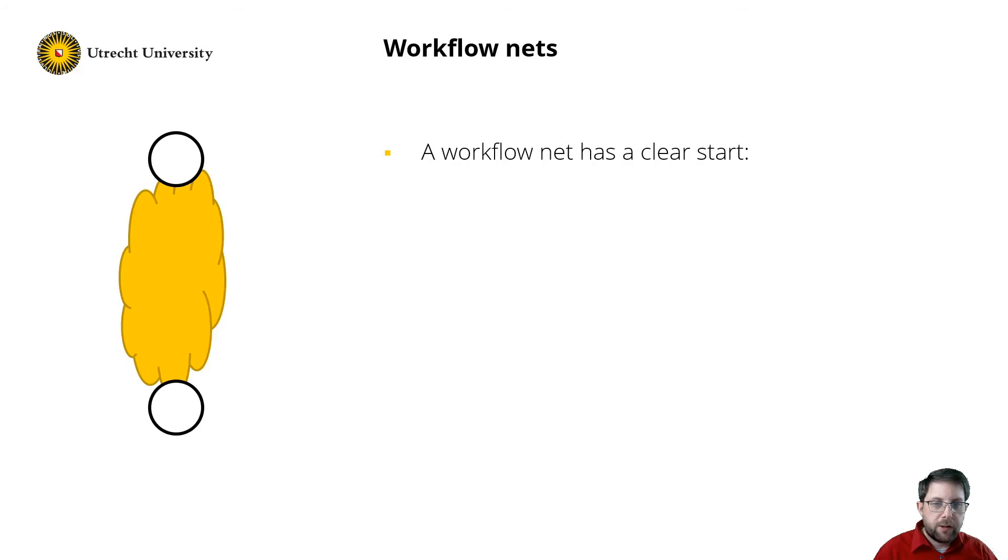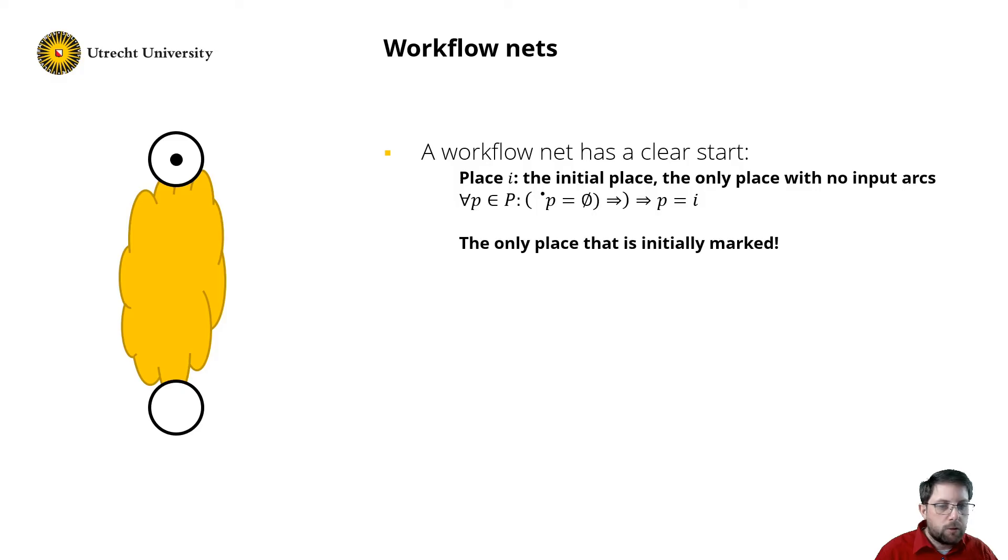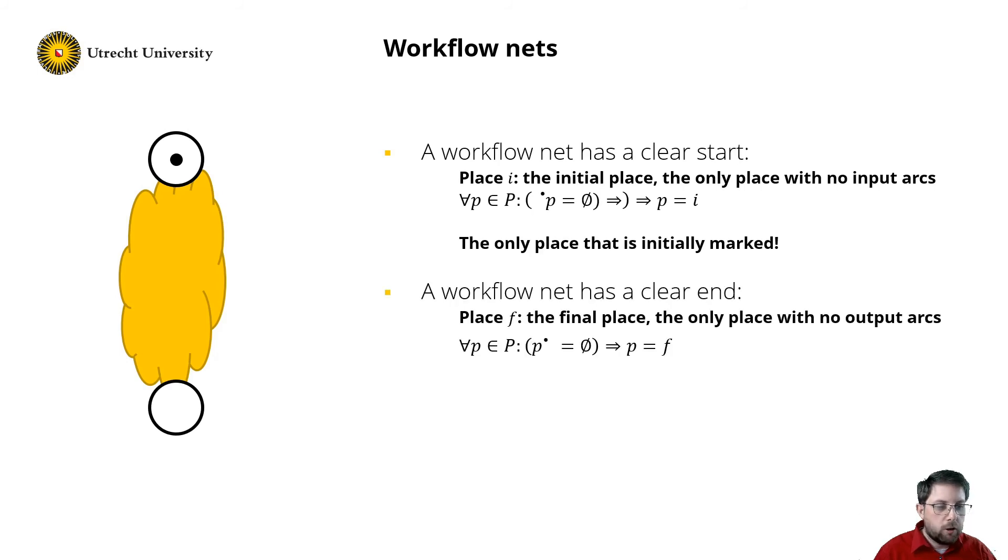A special class of Petri nets are workflow nets. A workflow net represents a business process in terms of a Petri net. There is a clear start, the initial place, that is the only place that has no input arcs. So no transition can produce tokens in that place. Therefore we initially mark it with a single token. It is the start of the process. A process also has a clear goal. In Petri net terms, that is a final place, which is the only place that has no output arcs. So no transition can consume from that place. It resembles the goal of the process. If we produce a token in that place, the process should be finished.